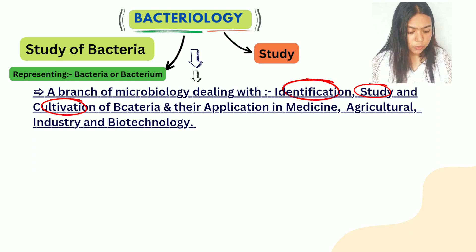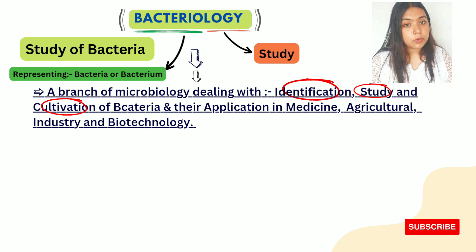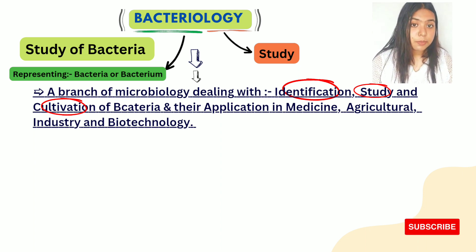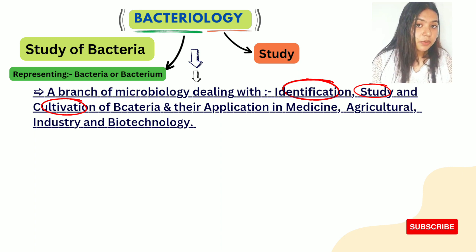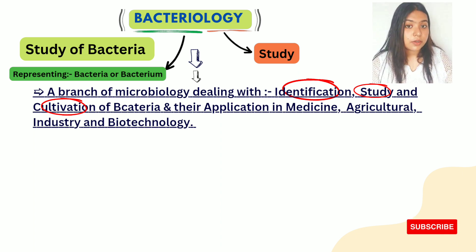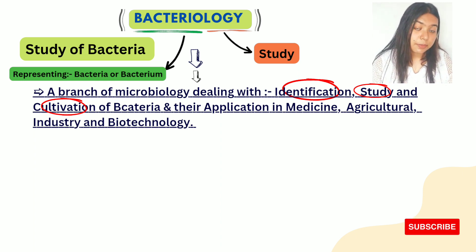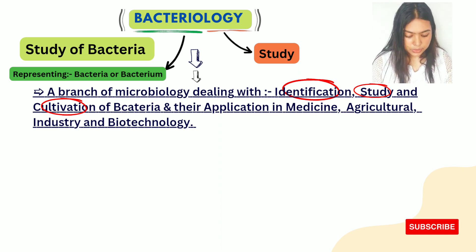We study bacteria to understand if there are any beneficial, non-pathogenic bacteria we have come across. Most bacteria are pathogenic, but some could be non-pathogenic. If a bacterium is pathogenic, we determine which disease it is causing. When we isolate a particular bacteria from a host, we grow it to identify what kind it is and what diseases it can cause.